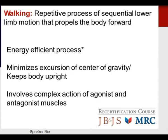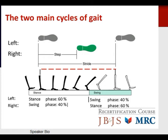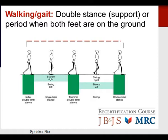Walking is a repetitive process of sequential lower limb motion that propels the body forward. It is an energy-efficient process that minimizes the excursion of the center of gravity and keeps the body upright, involving a complex action of agonist and antagonist muscles. There are two main cycles of gait: stance and swing phases, with 60% normally in stance and 40% in swing. The double support phase is when both feet are on the ground.